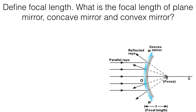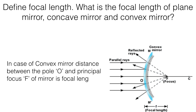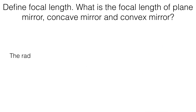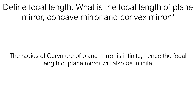Focal length of a concave mirror is always taken as negative, while the focal length of a convex mirror is taken as positive. The radius of curvature of a plane mirror is infinite, hence the focal length of the plane mirror will also be infinite.